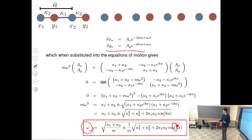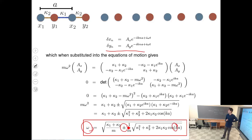The solution comes from diagonalizing a two-by-two matrix: we write the two equations of motion in matrix form, plug in the wave solutions, and solve for the eigenvalues. The solution — shown in the red box — is a more complicated expression than for the monoatomic chain, but nevertheless contains all model parameters kappa1, kappa2, M, and A, connecting omega to k. Because we're diagonalizing a two-by-two matrix, we get two eigenvalues, meaning two omegas for each k — two additional branches in the dispersion relation.